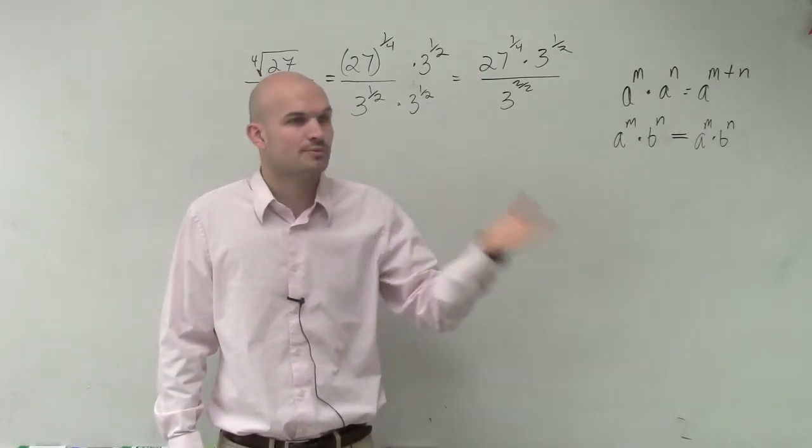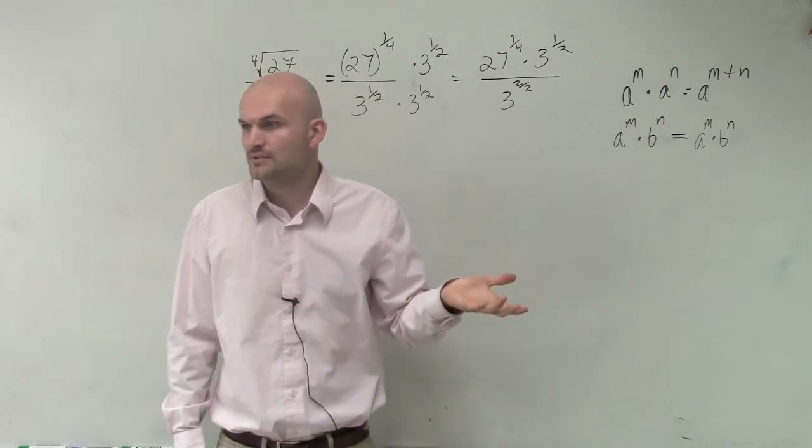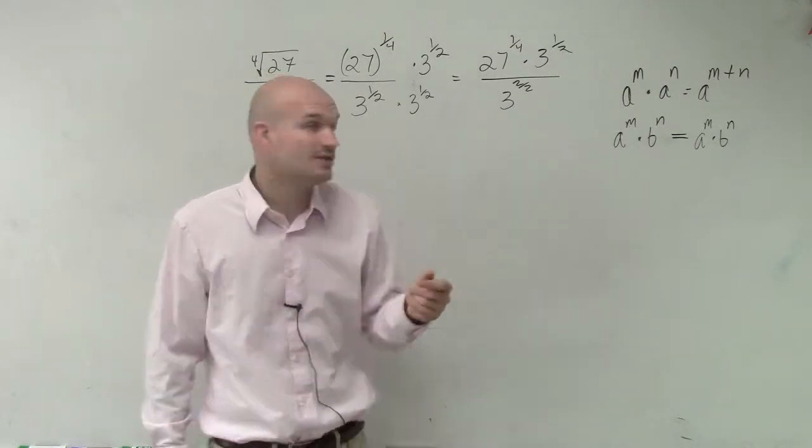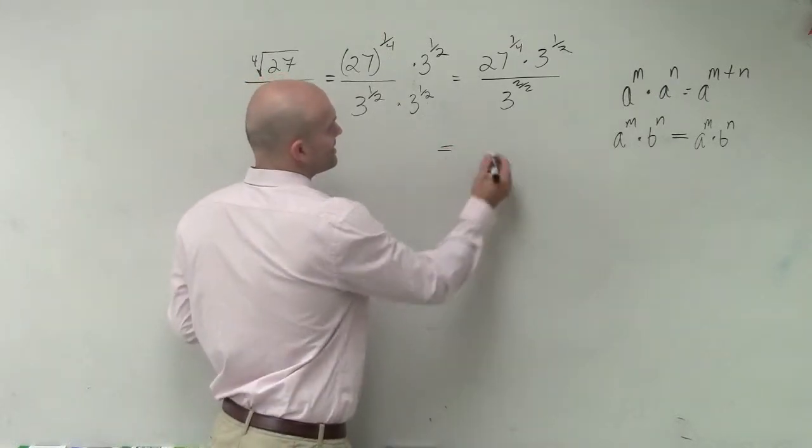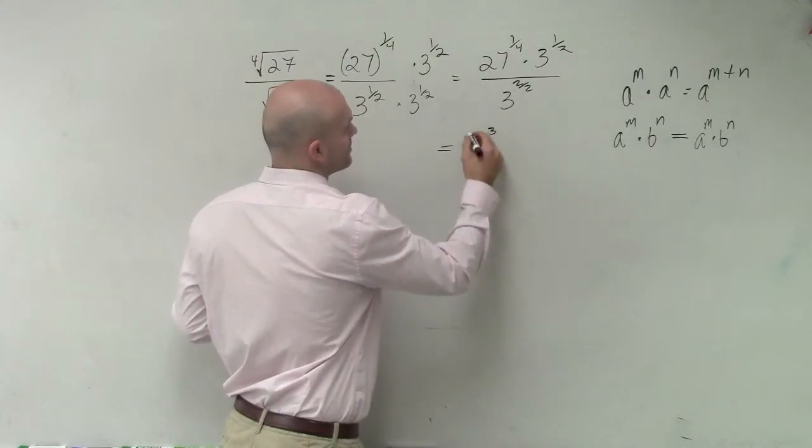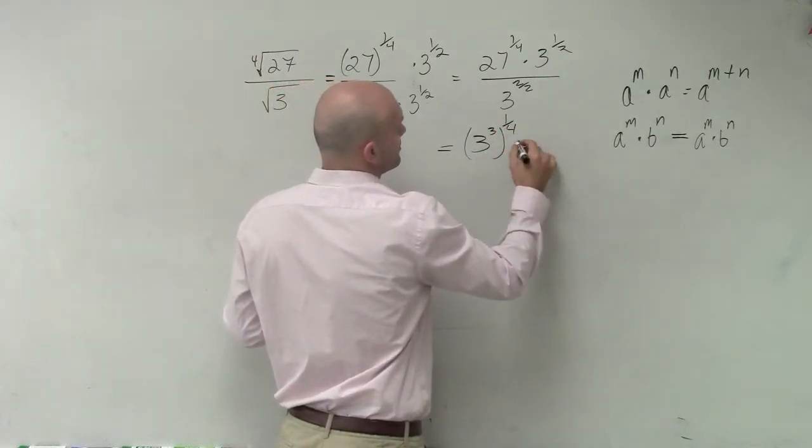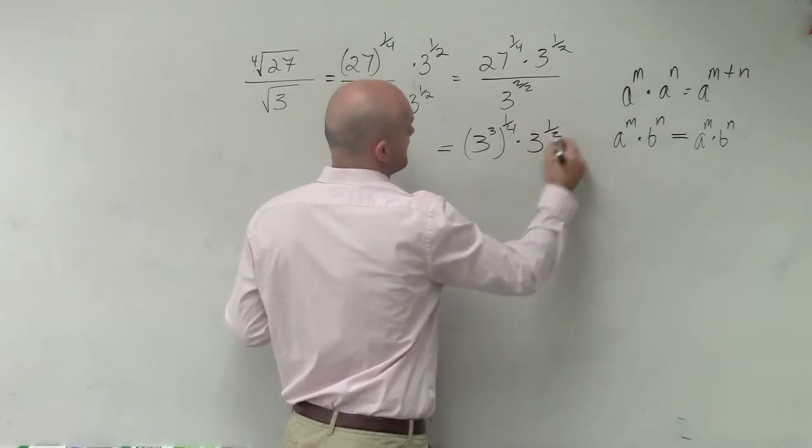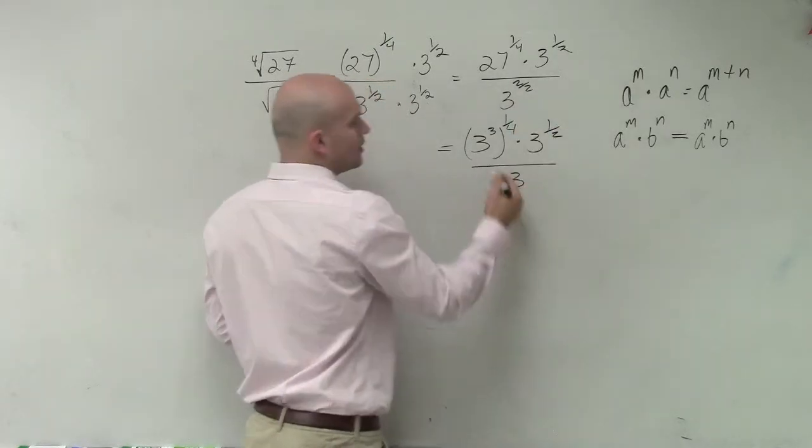Is it 3 squared, 3 cubed, 3 to the 4th? Is there any of them? Does anybody know? 3 cubed. 3 cubed, exactly. So we can rewrite this now as 3 cubed to the 1 4th power times 3 to the 1 half power over 3.